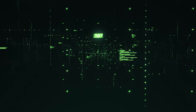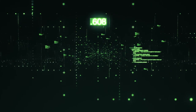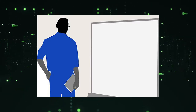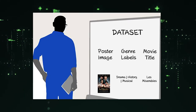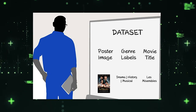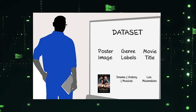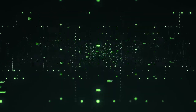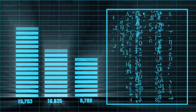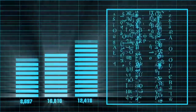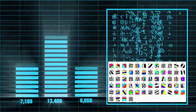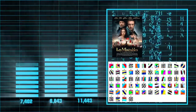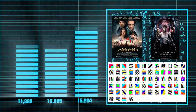Let's first look at our dataset. As you can see, we only have the posters, genre labels, and titles — but we wouldn't be using the titles. The easiest way to train would be to toss everything into the CNN and let the algorithm do the magic. However, that wouldn't be any fun.